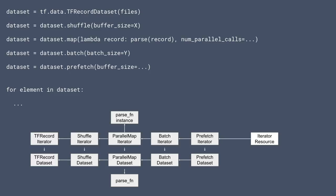A question was raised about ragged tensor support — not yet supported, but the CLs introducing that support are very close. Through the review process, the team has been cognizant of making the implementation efficient from the start. Sparse tensors are already supported. The hope is that programs using sparse tensors that could also use ragged tensors will see a performance boost by switching to ragged tensors once that support is rolled out.